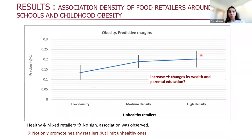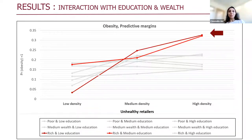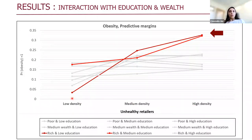We also explored whether this association changes based on socioeconomic characteristics of children — specifically, wealth and parental education. We tested whether there was an interaction between education and wealth, and we did find a significant interaction. With increasing density of unhealthy retailers — moving from one tertile to the next — the highest increase in obesity probability was observed among children from rich households with low maternal educational levels, represented by the dark red line, showing a substantial and significant magnitude of increase.